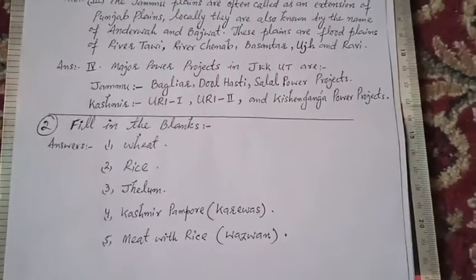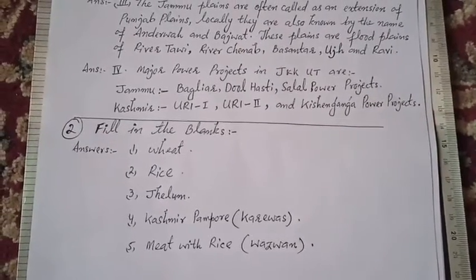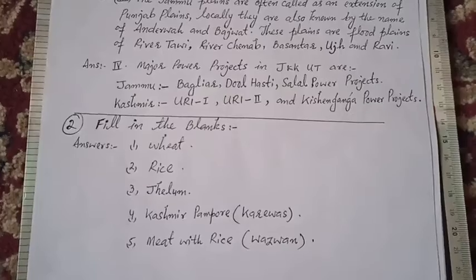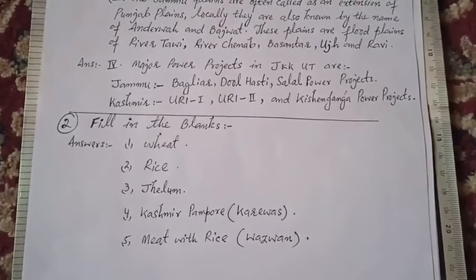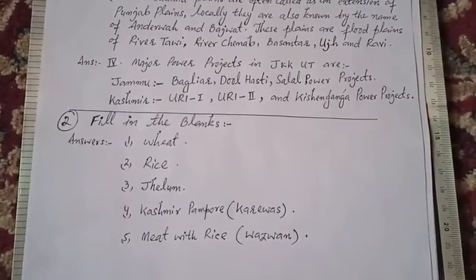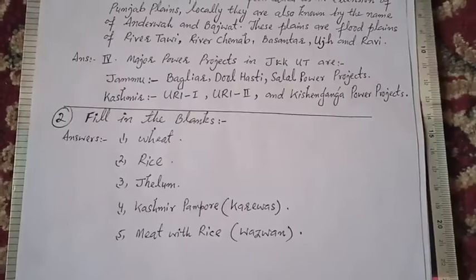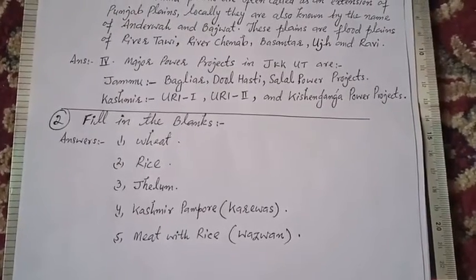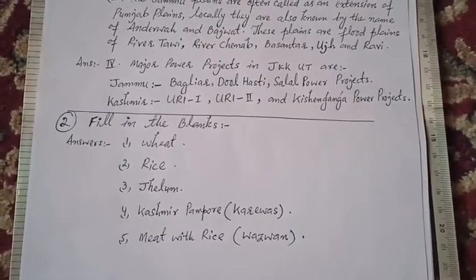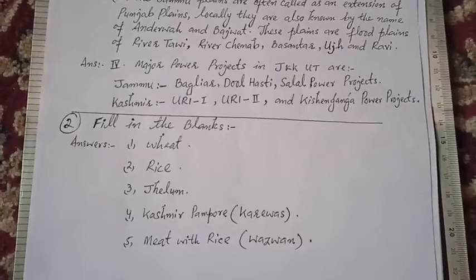Now question number two: fill in the blanks. The right answers are: number one, the staple food of Jammu is wheat. Number two, the staple food of Kashmir is rice. Number three, Jhelum is the main tributary of River Jhelum.